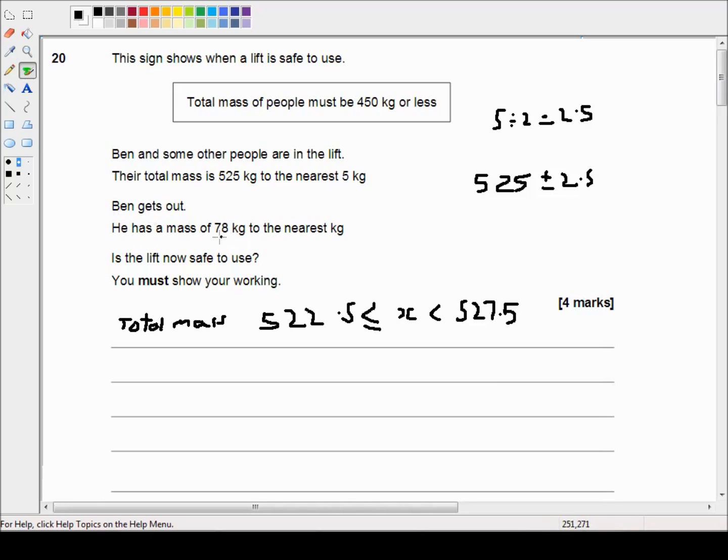Now Ben has a mass of 78 kilograms to the nearest kilogram. So 1 kilogram divided by 2 is a half. So plus or minus a half. So Ben is 77.5 kilograms less than or equal to, let's say y this time, less than 78.5. So Ben has to be less than 78.5 kilograms.